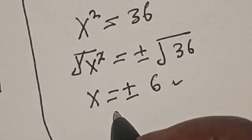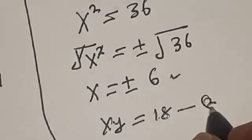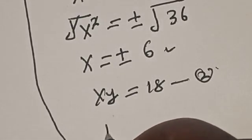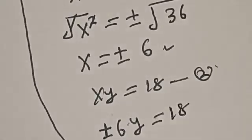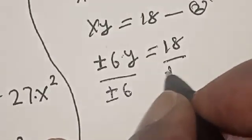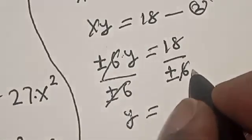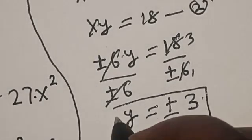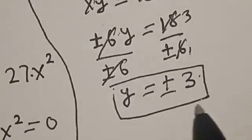Now, substituting x equals plus or minus 6 into equation 2, which is xy equals 18, we get plus or minus 6 times y equals 18. Dividing both sides by plus or minus 6 gives y equals plus or minus 3.